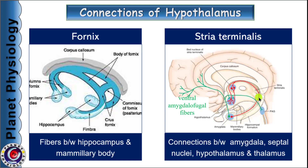The third fibre system is the ventral amygdalofugal fibres, shown in green colour. Unlike stria terminalis, they form more direct connections and possess a greater number of myelinated nerve fibres. These fibres also connect different regions of the amygdala to the thalamus, hypothalamus, septal nuclei, and forebrain.